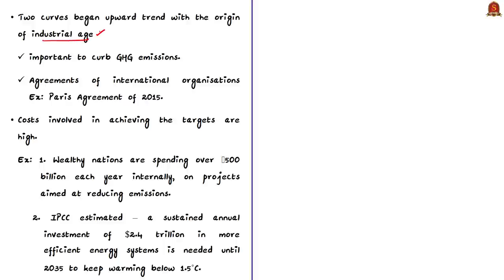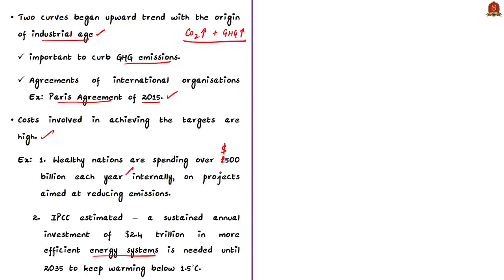The industrial age led not only to increased CO2 emissions but also to increased greenhouse gas emissions — those gases that raise the temperature of the globe. International organizations came up with agreements putting responsibilities on countries to reduce greenhouse gas emissions within stipulated time periods. The most well-known is the Paris Climate Agreement of 2015. However, the costs involved in achieving climate targets are quite high — wealthy nations are spending over $500 billion every year within their countries on emission-reduction projects.